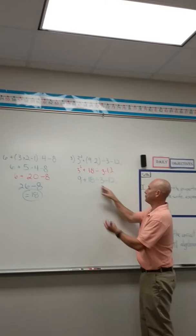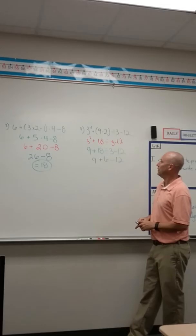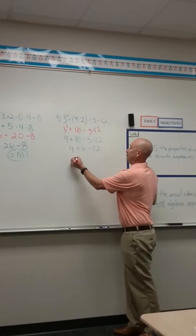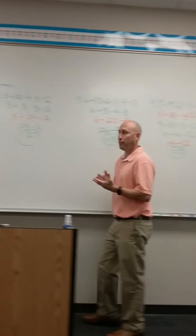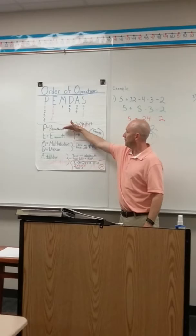In the order of operations, division comes before addition or subtraction. So I must do the division first. 18 divided by 3 is 6. Bring down the other operations. Now I have 9 plus 6 minus 12. Last two things I need to do is work these from left to right as addition comes before subtraction being from left to right. 9 plus 6 is 15. And 15 minus 12 equals 3.